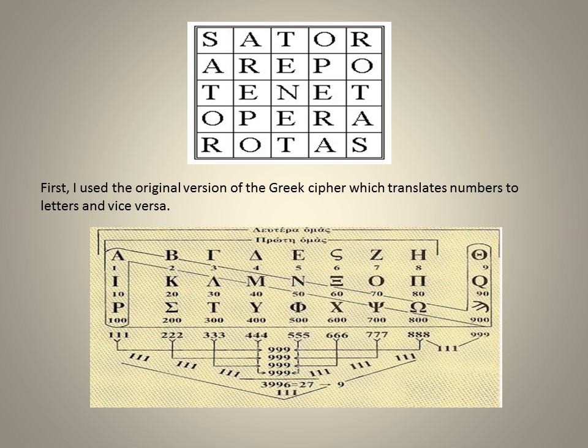First, I used the original version of the Greek cipher, which translates numbers to letters and vice versa. Over the years, some of these were taken out of use, so it was important to use this cipher and no more modern version.